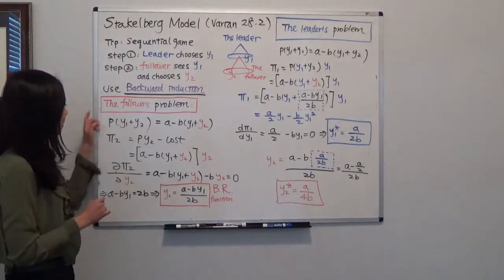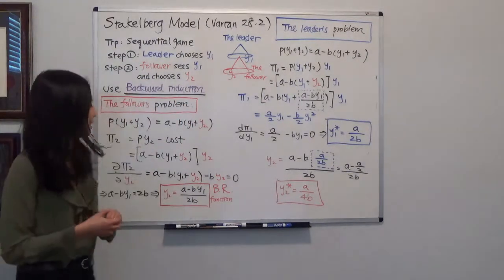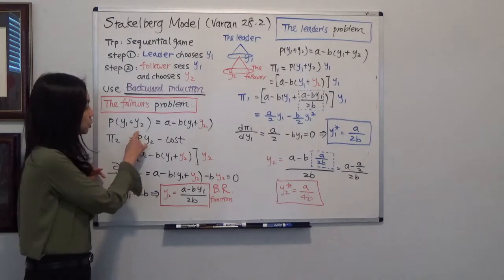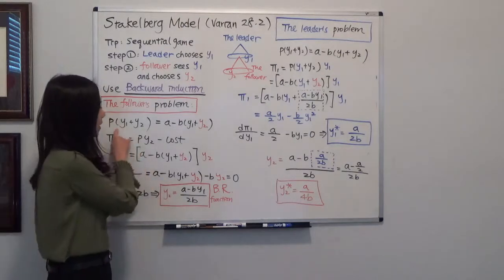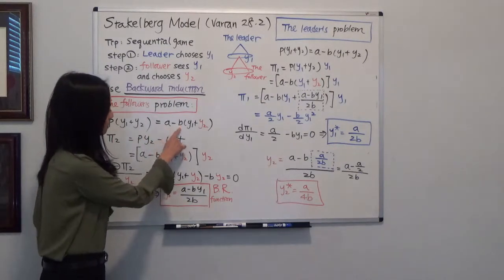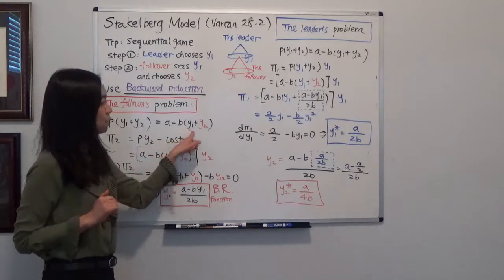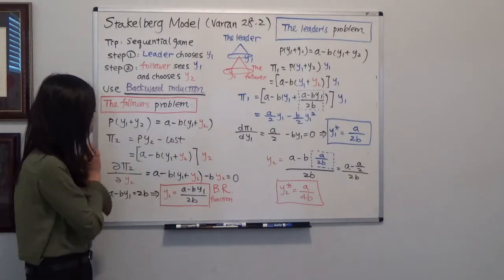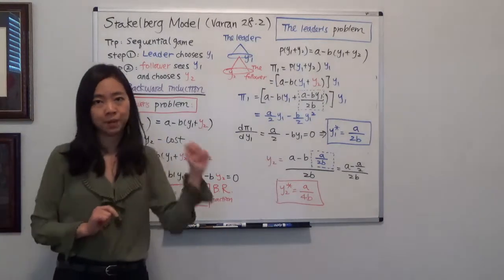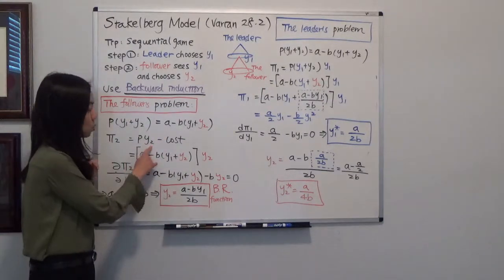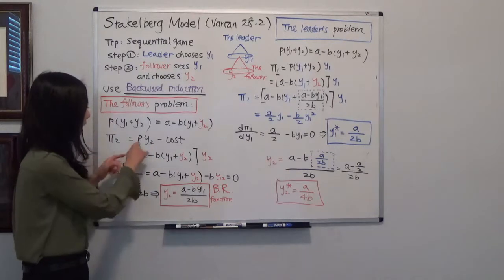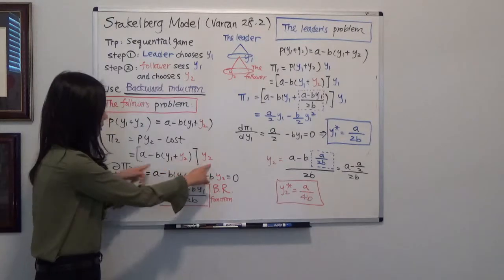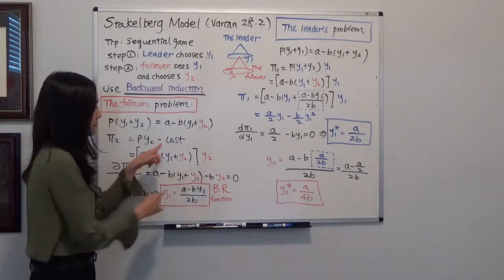Here, we're going to solve the follower's problem first. We know the price is a function of Y1 plus Y2. In particular, in Varian's book, the price is equal to A minus B times Y1 plus Y2. So that is the price function. Now, the profit is equal to revenue minus cost. So revenue is price times quantity, and the price is this function, so we just plug that in, times the quantity that will be your revenue minus cost.